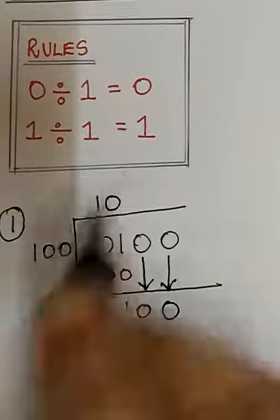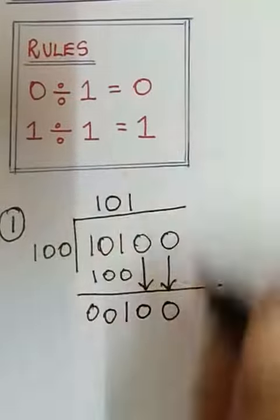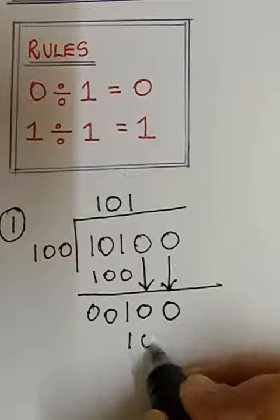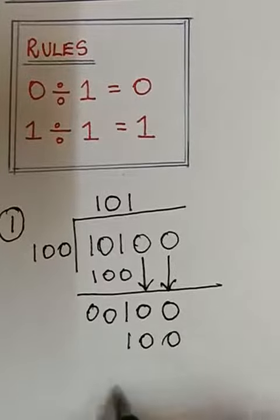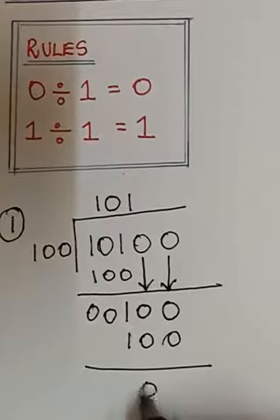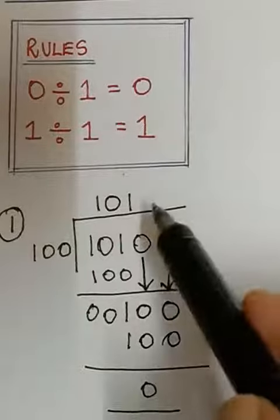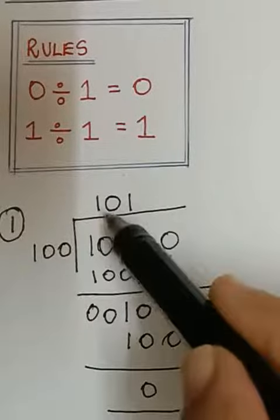Now 100 multiplied with 1 will give you 100. And so the remainder will be 0. And therefore the quotient that is the answer is 100.